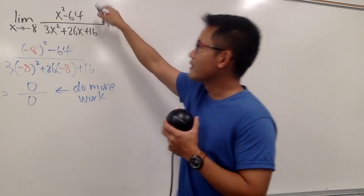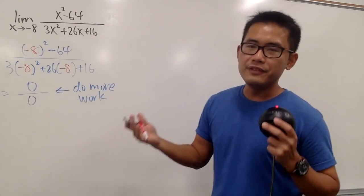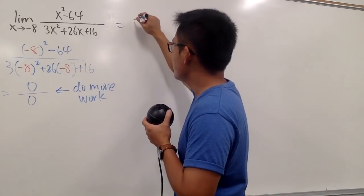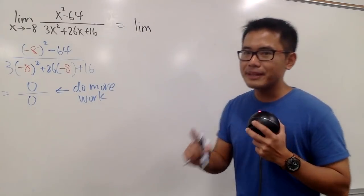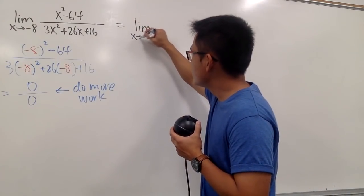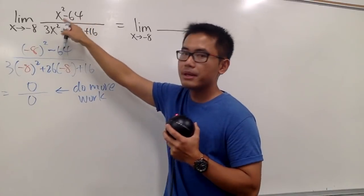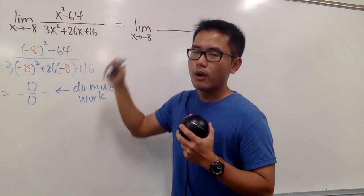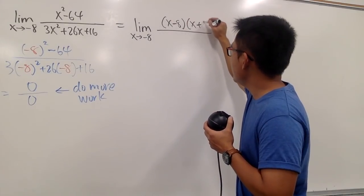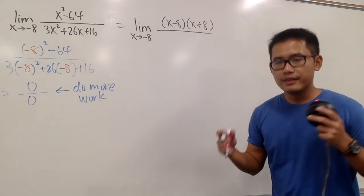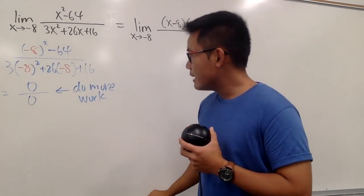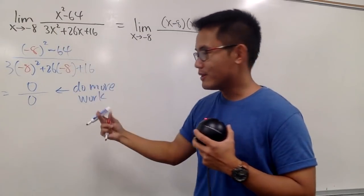Let's factor the top and the bottom to see if anything good happens. Writing down the limit again as x approaching negative 8: on the top, x squared minus 64 factors as (x minus 8)(x plus 8). On the bottom, we have a trinomial — 3x squared plus 26x plus 16 — which we can also factor.